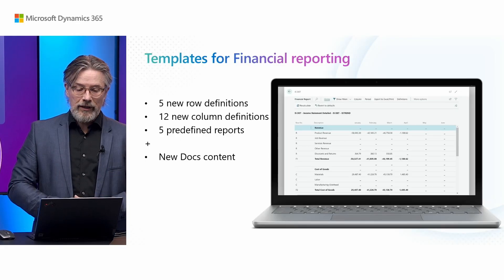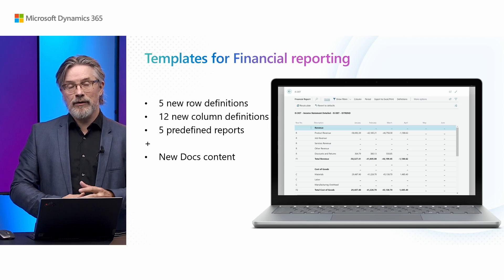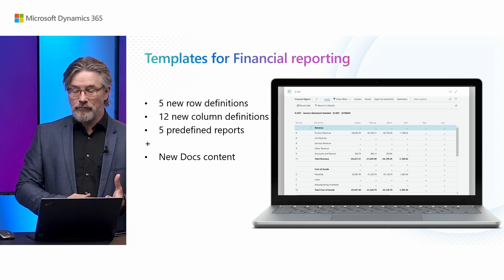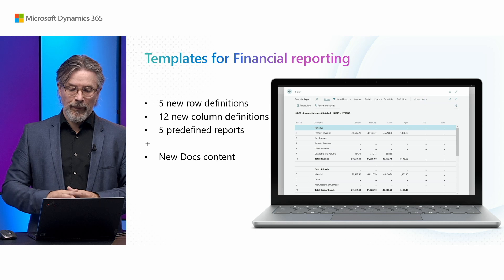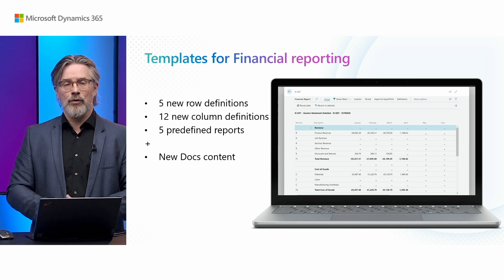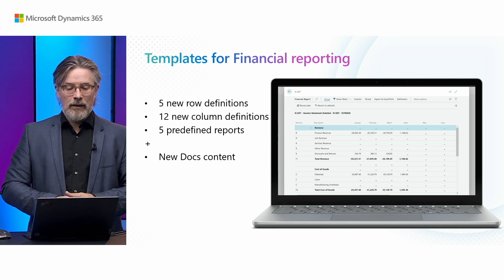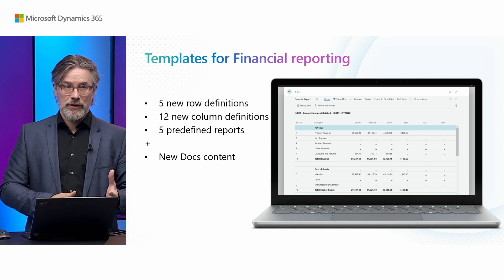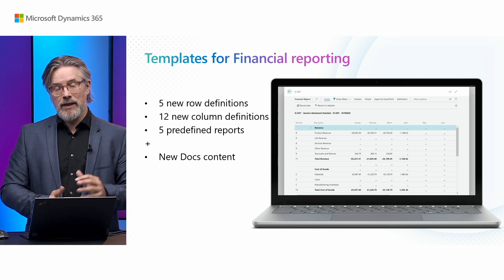The third thing we did for reporting in the financial area is that we added more templates for the financial reporting module, where you combine row definitions with column definitions. So you can create your own reports or variants of reports, and you can also take the templates and start creating your own. There are five predefined reports: balance and income statement detailed or summarized, and there's a trial balance with just the posting entries to get you started. There is new docs content for all of this, with tips and tricks on how to create the best reports in the financial reporting module.